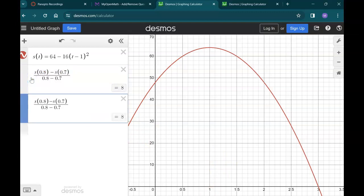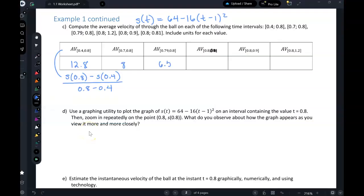There's 0.79 to 0.8. And let's go ahead and fill those in. So our slopes were 8 and 6.56.